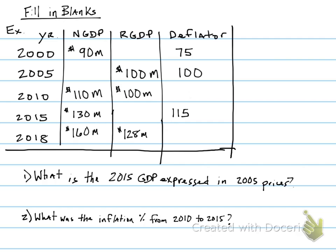Looking at the data, for 2005 the GDP deflator — our price index — has a value of 100, so I know that 2005 must be my base year. That means all of my real GDP values are adjusted for inflation using the year 2005. Now let's start with the year 2000 and figure out what the real GDP was.